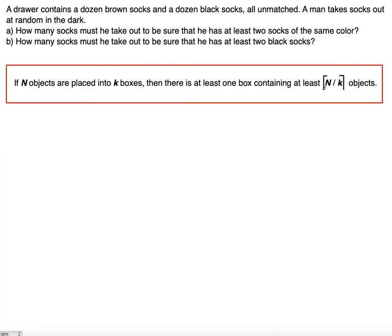The ceiling function means that whatever result you get, you will round it up to the nearest integer. This means the least integer greater than or equal to N over k. So we have to decide how we're going to use it for part A.